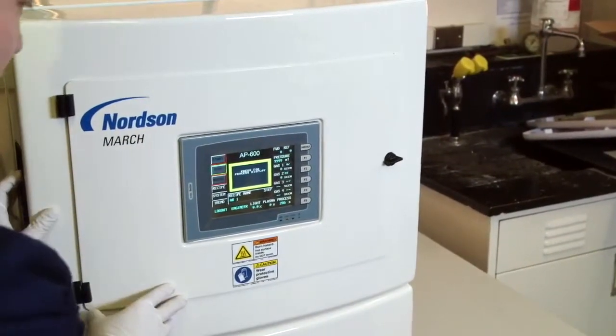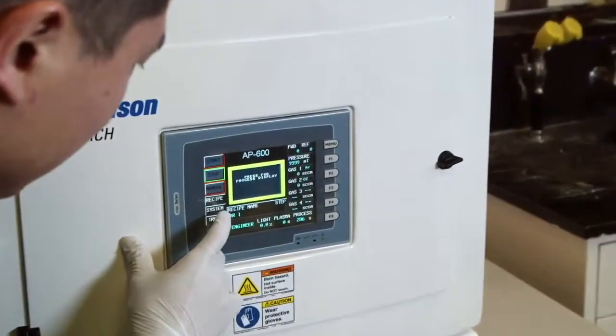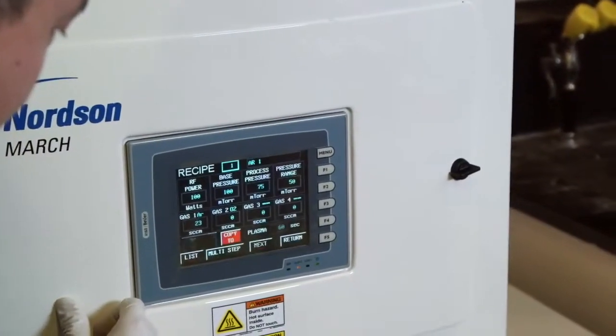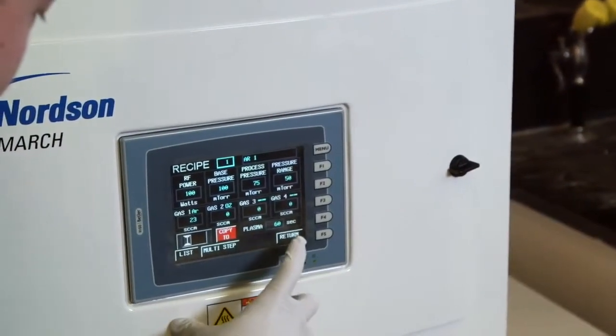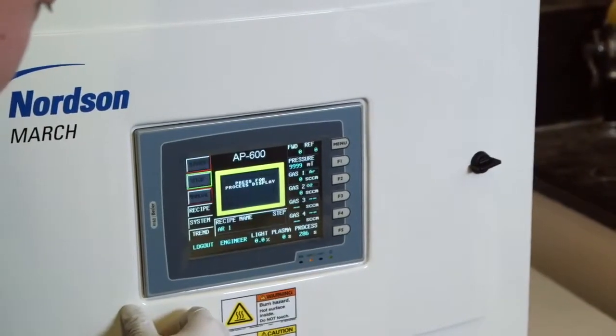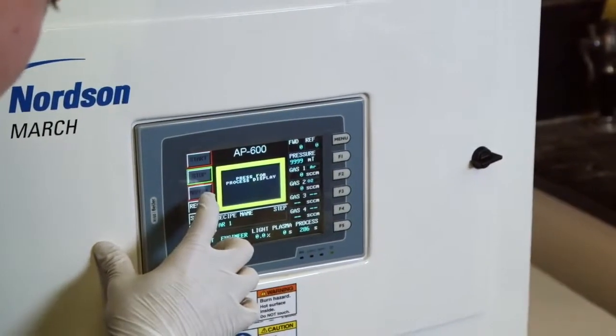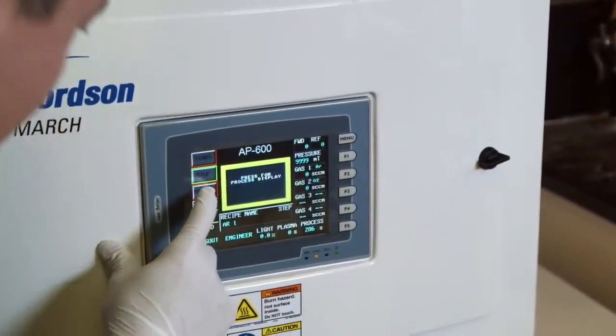To select the right one for your material, you can go to the recipe editor on the front of the machine. Here, you can change parameters including power, duration, and the kind of gas that is used for cleaning.